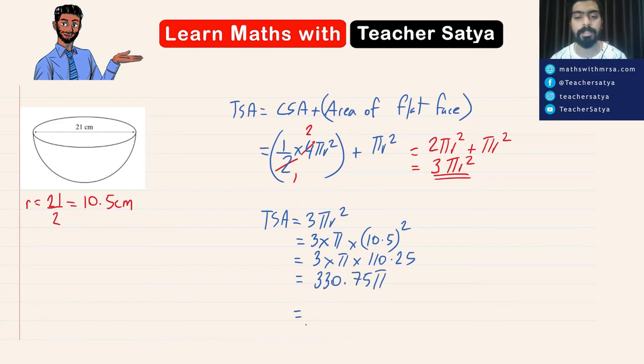Now if we take the value of pi as 3.14. Right guys? 3.14 multiplied by 330.75. We should get an answer approximately 1038.555 centimeter square.